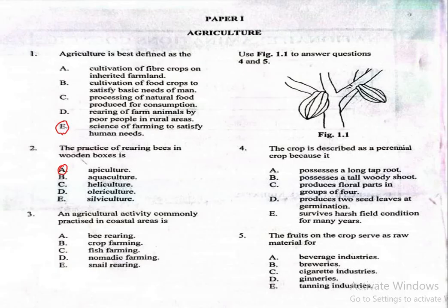Question number 3. An agricultural activity commonly practiced in coastal areas is: A. Bee rearing, B. Crop farming, C. Fish farming, D. Nomadic farming, E. Snail rearing. The correct answer is fish farming, which is option C.